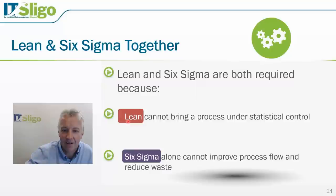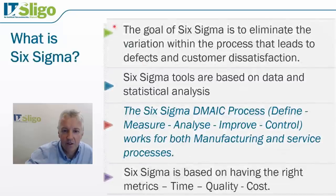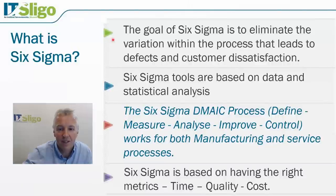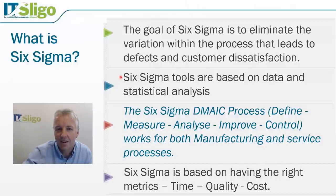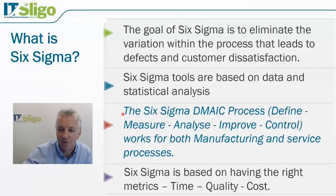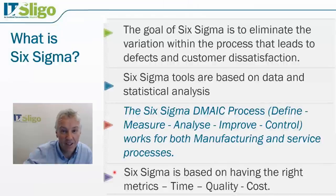Let's spend a little time looking just at Six Sigma. The goal of Six Sigma is to eliminate variation within the process — variation that causes quality problems and dissatisfied customers. The tools are based on collecting data and then analyzing it statistically. Six Sigma also uses the structured problem-solving process DMAIC: Define, Measure, Analyze, Improve, and Control. We will spend a lecture on each of these five phases. It works for all processes — both manufacturing and service — and is based on having the right metrics.